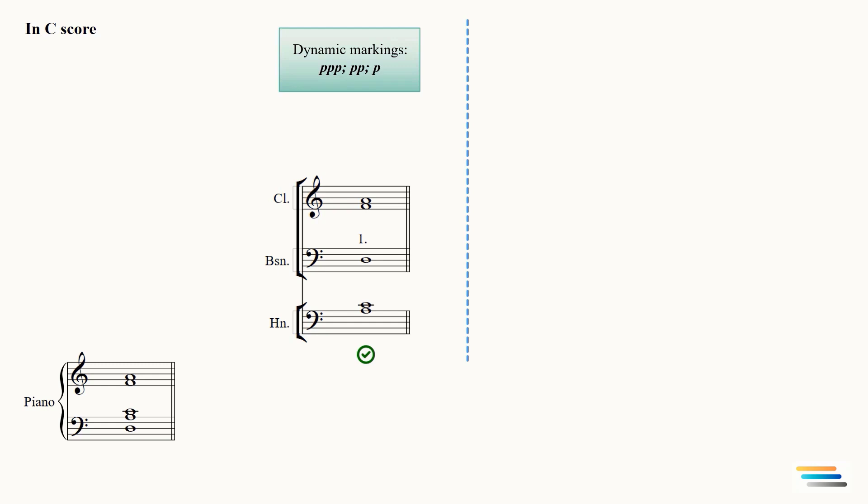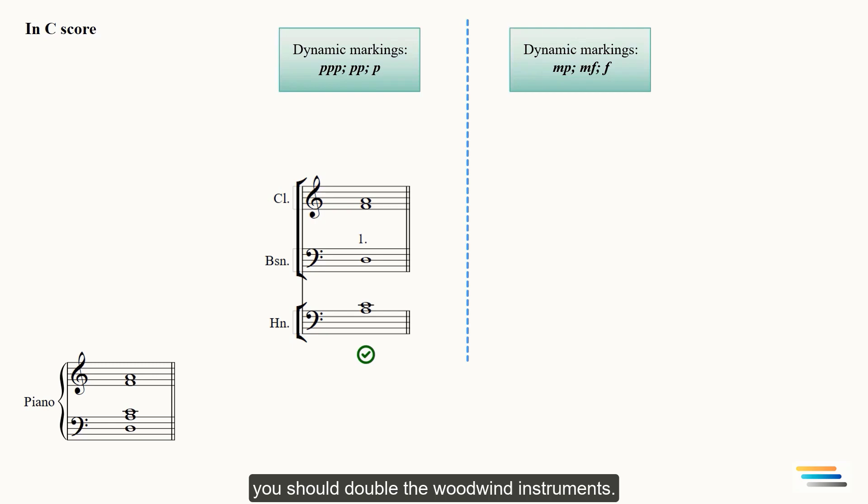When dynamic marking is mezzo piano or stronger, you should double the woodwind instruments, especially if the chord contains 4, 5, and 6 notes.